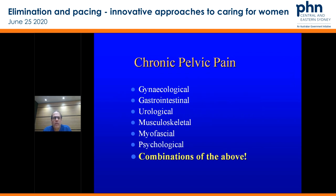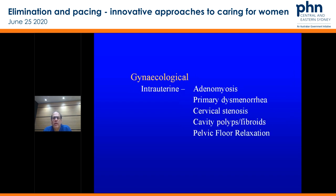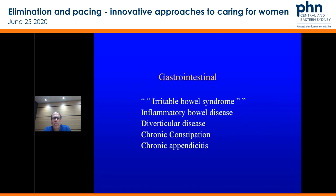There are lots of causes for chronic pelvic pain: gynae, gastro, urological, musculoskeletal, myofascial, psychological, and combinations. Extra-uterine causes in gynae include endometriosis, PID, pelvic congestion, and adnexal cysts. Intrauterine causes include adenomyosis, primary dysmenorrhea, cervical stenosis, cavity polyps, fibroids, and pelvic floor relaxation. I put irritable bowel syndrome in double inverted commas because in that reproductive age group, most IBS relates to focal pathology such as endometriosis — it's not normally a primary bowel diagnosis, although they can have correlation.